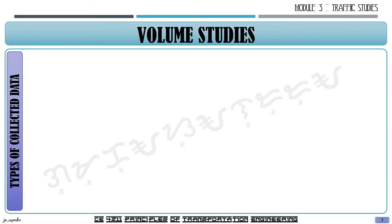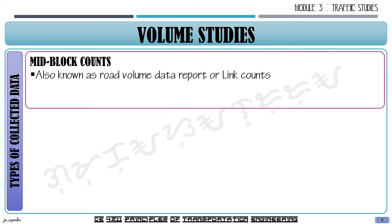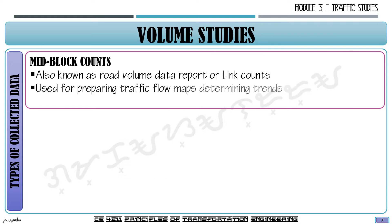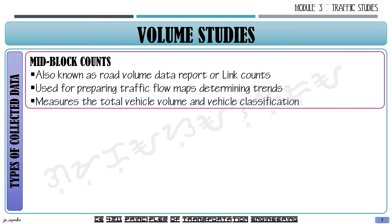The next type of collected data is mid-block counts, also known as road volume data report or link counts. This is used for preparing traffic flow maps, which helps determine the trends of vehicles — how vehicles arrive or depart from a certain road section. It is also used to measure total vehicle volume and vehicle classification, making it closely related to classification counts.